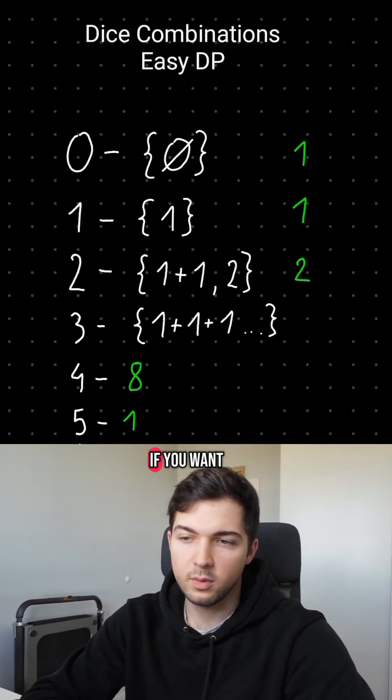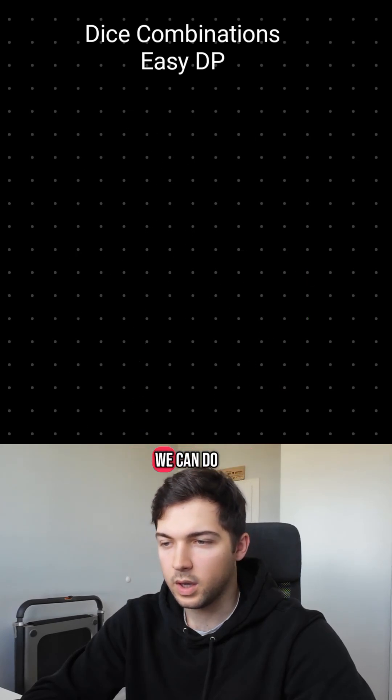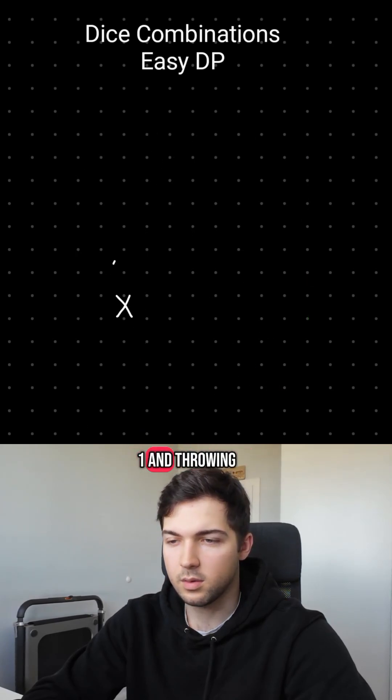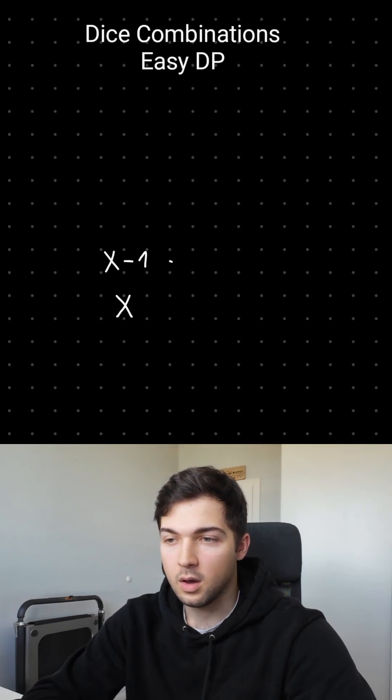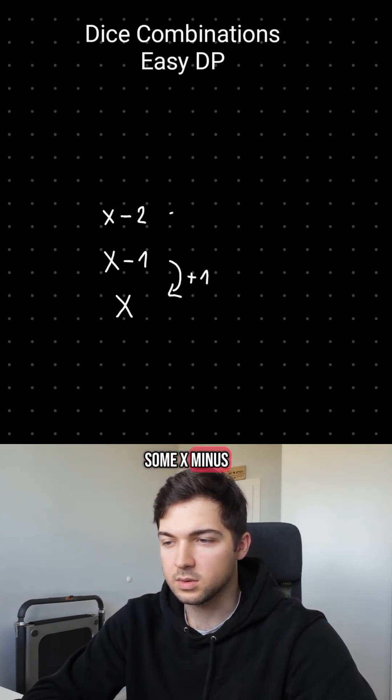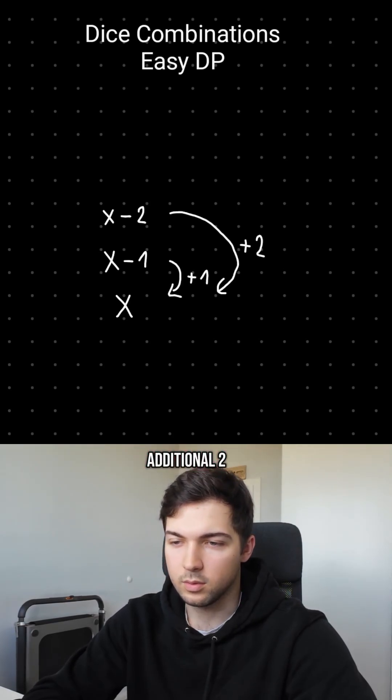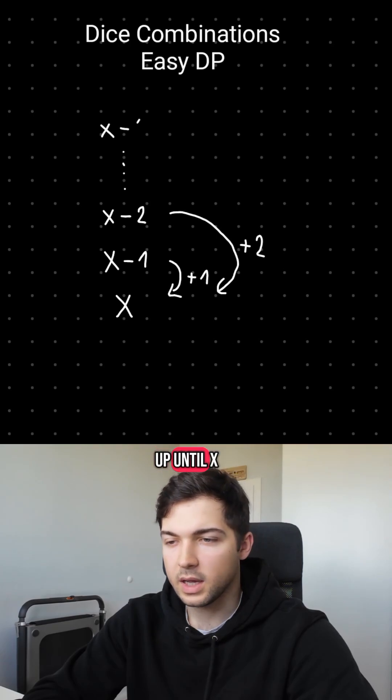Well, that's because if we want to create some x, we can do so by taking some x-1 and throwing an additional 1, or by taking some x-2 and throwing additional 2, and so on up until x-6.